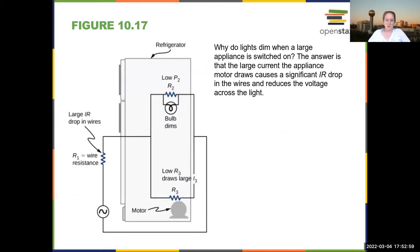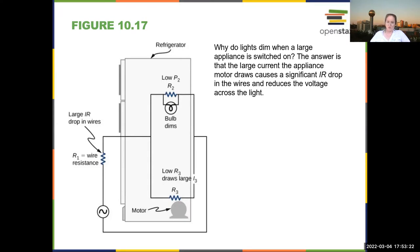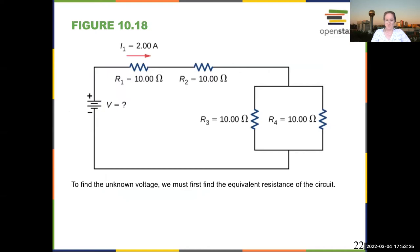You can ask the question: why do lights dim when a large appliance is switched on? The reason is that you are drawing a significant current, so there's a large current drop in the wires, which reduces the voltage across the light. That's one of the problems you had to do for homework.